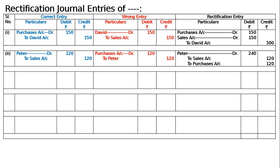The wrong entry — purchases to Peter — will be reversed. Peter debit again, 120. To nullify the wrong effect, two purchases account entries are cancelled, so credit to purchases account, 120. Then the third entry follows.